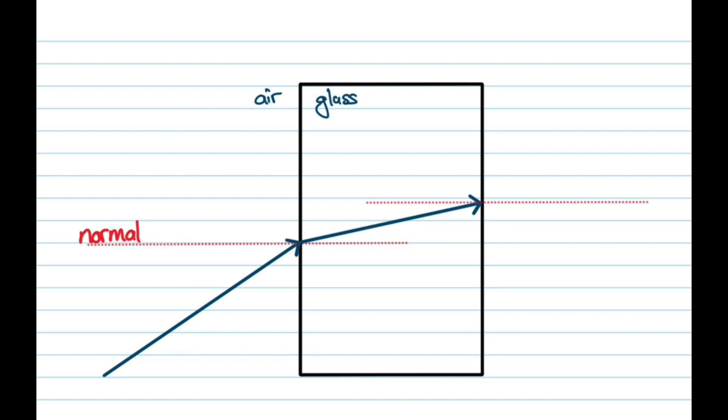What do we do now? We draw the normal again. But now we're going from glass, which is more dense, to air that is less dense, which means now we move away from the normal again.